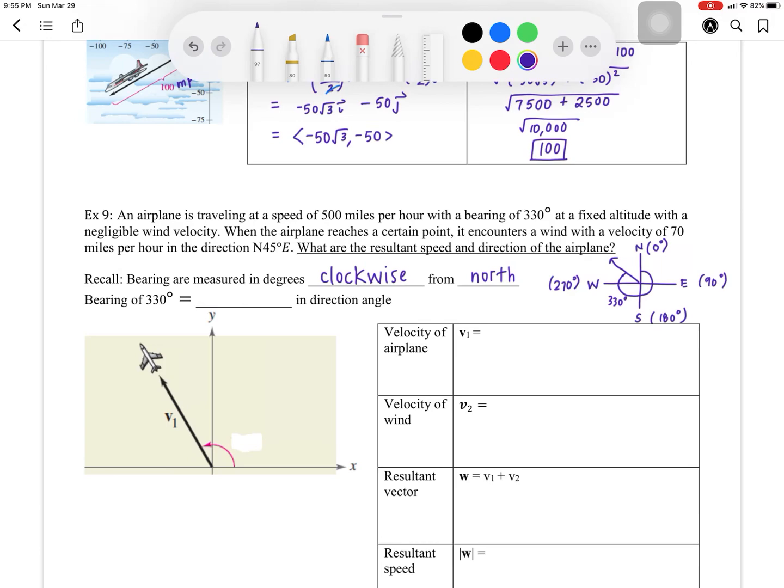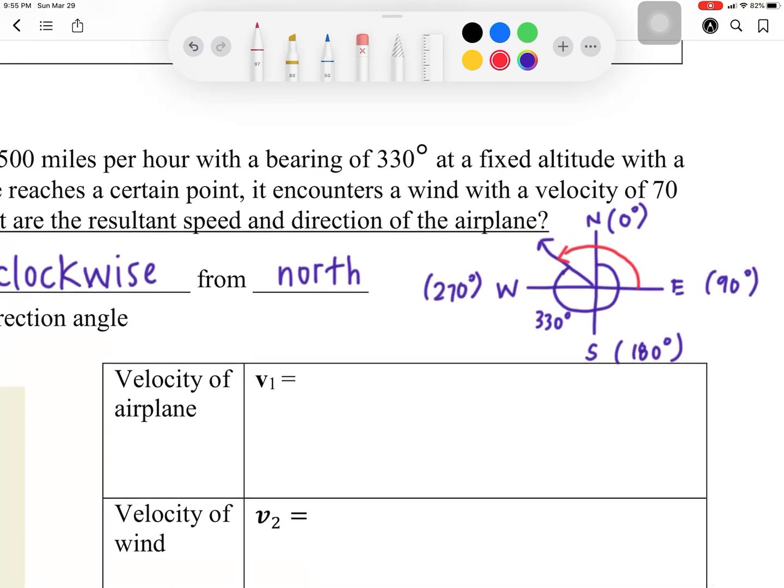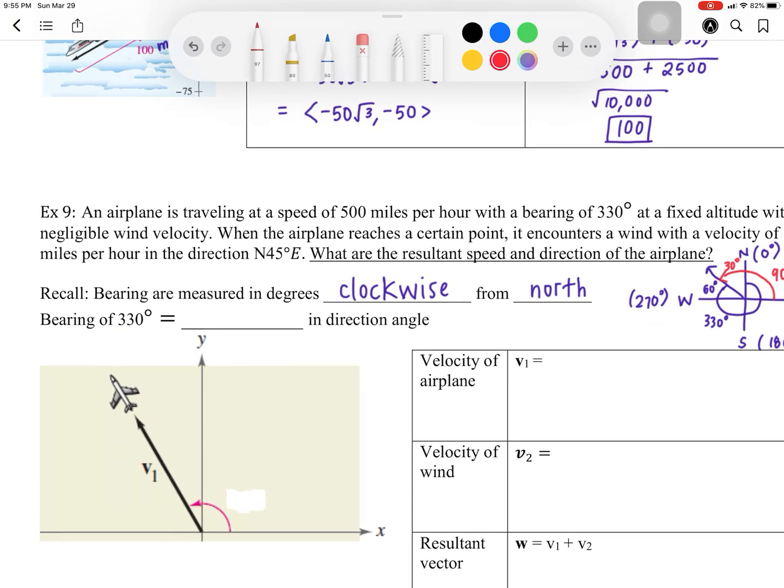But that is not our direction angle. Our direction angle is the one that measures from the positive x-axis to the angle. So the red one is your direction angle. Well, how do we figure it out? This from the first quadrant is 90 degrees. How much more do you need? Well, this side is 60 degrees. So therefore, the leftover side should be 30 degrees. So your direction angle is taking 90 degrees plus 90 degrees plus 30 degrees, and that should give you 120 degrees.